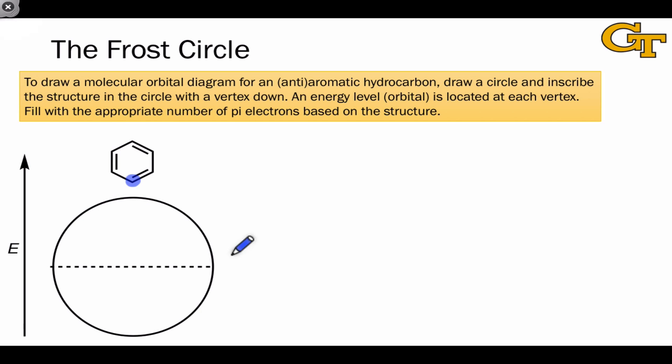After you've done that, draw a circle and inscribe the molecular structure within the circle. Here, we're dealing with benzene, which is a perfect hexagon, and so inscribing benzene in the circle would look something like this.